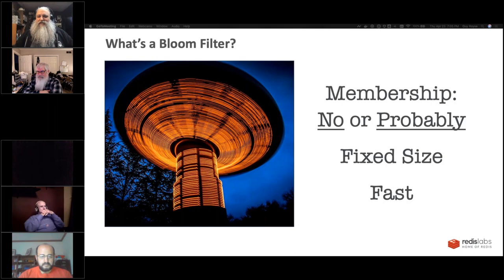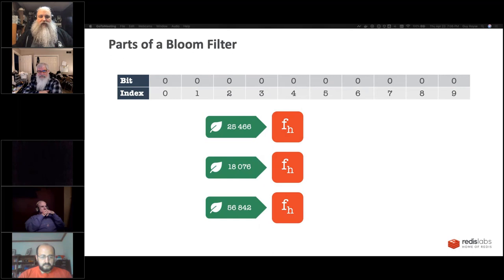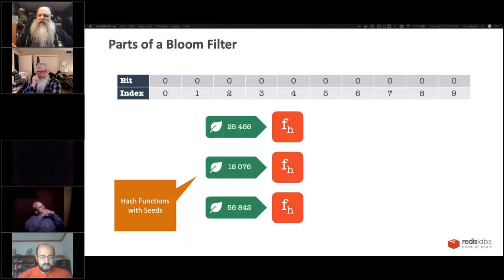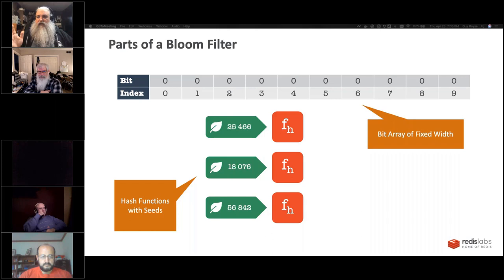One big caveat: you build bloom filters for a particular capacity. If you go over that capacity, they start saying everything in the universe is in the set — they'll give false positives all the time. There are two main parts to a bloom filter: hash functions with their seeds, and a bit array of fixed width. Here I've selected three hash functions — you can select as many as you want. Determining the number of hash functions is a feature that determines the capacity. It's the same function but with different seeds, like a murmur hash. And the bit array — in this example, width 10 — is initially all zeros.